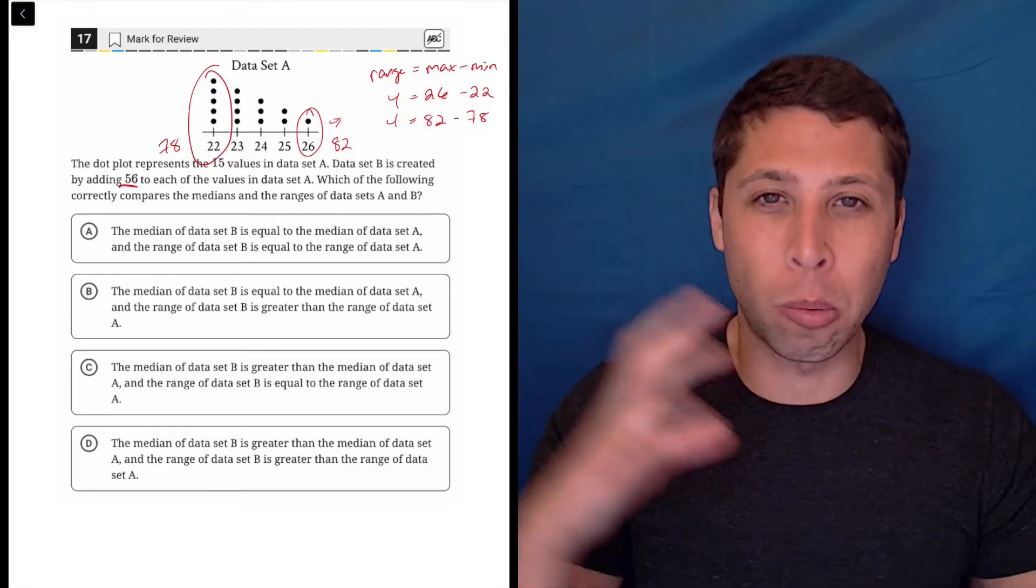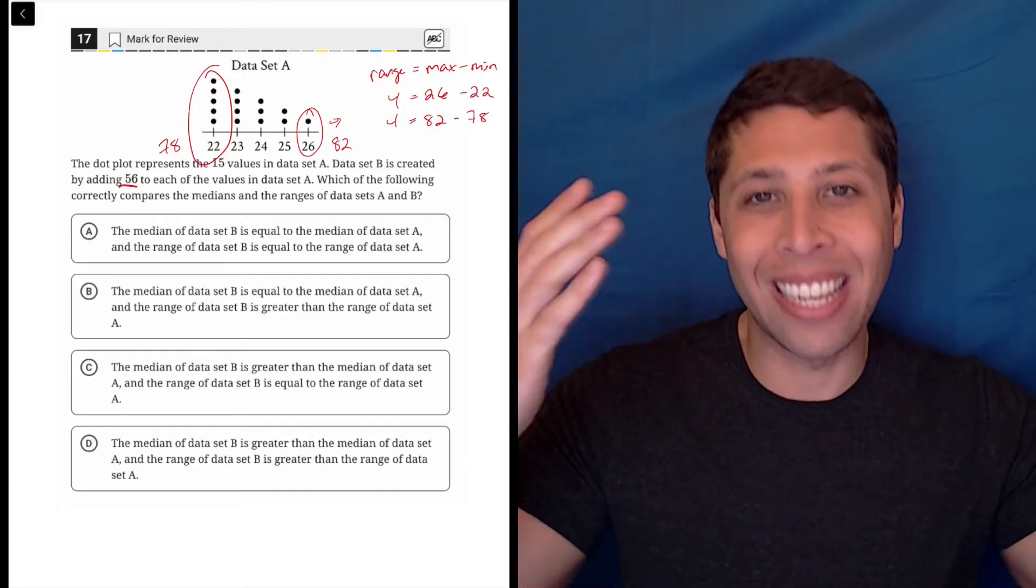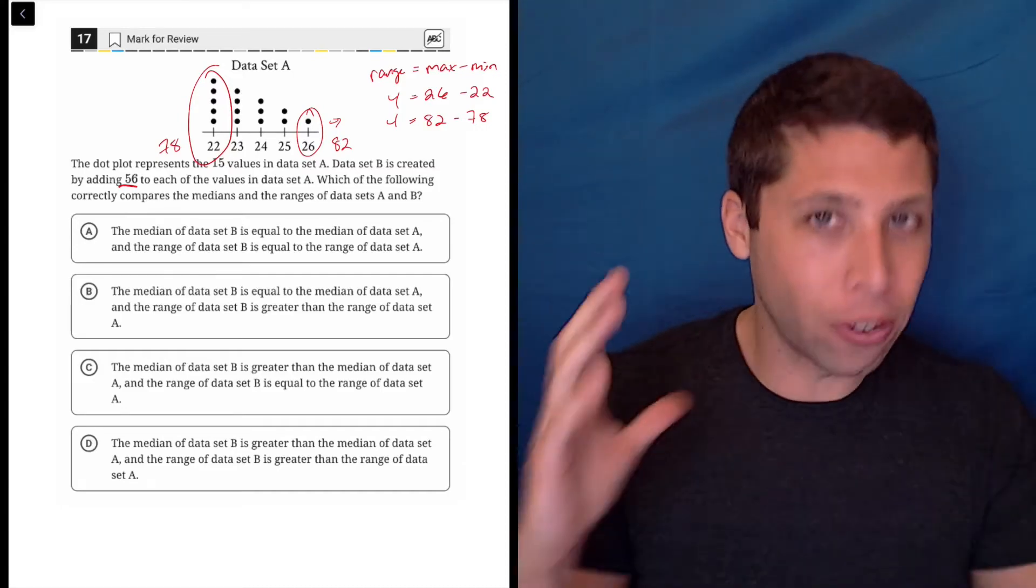So the range is always this difference between the maximum and the minimum. If all the points are shifting by the exact same amount, the difference between them will not change.